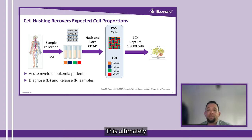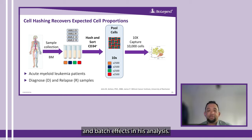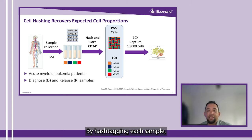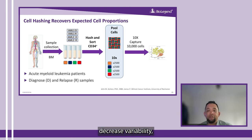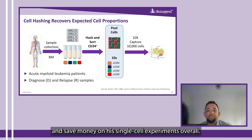This ultimately increased the cost of his experiments and introduced variability and batch effects in his analysis. By hashtagging each sample, he was able to load more samples per lane, decrease variability, decrease batch effects between samples, and save money on single-cell experiments overall.